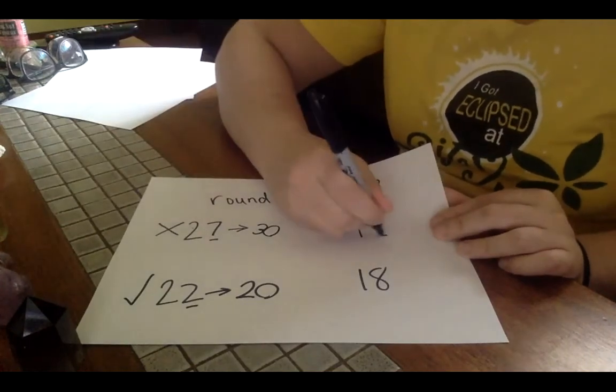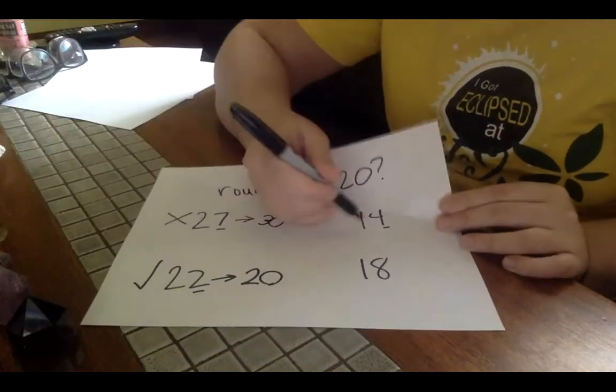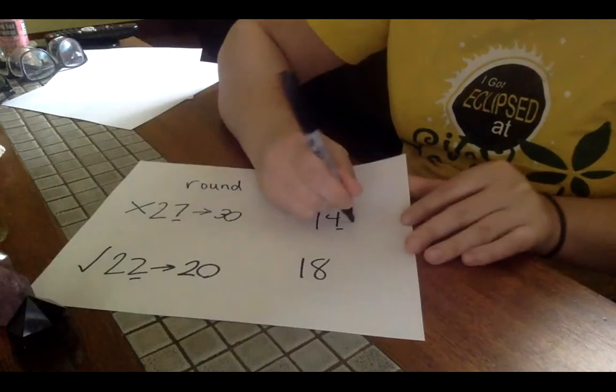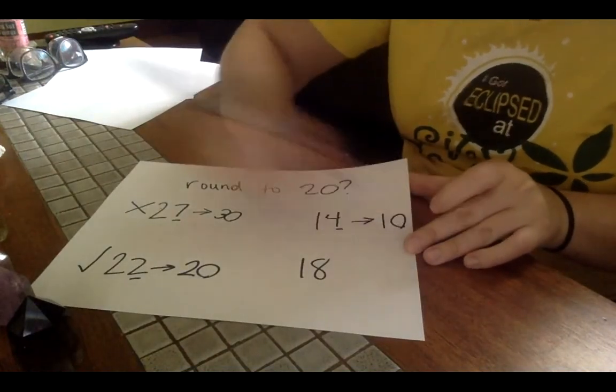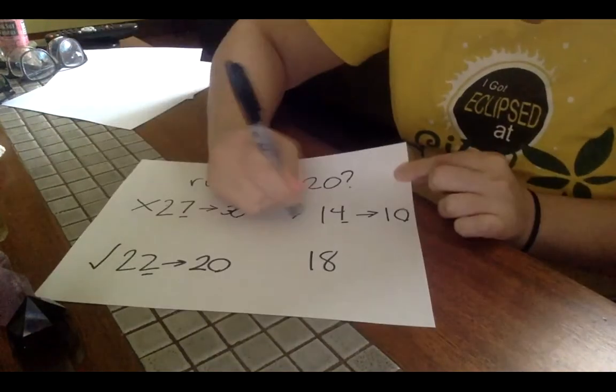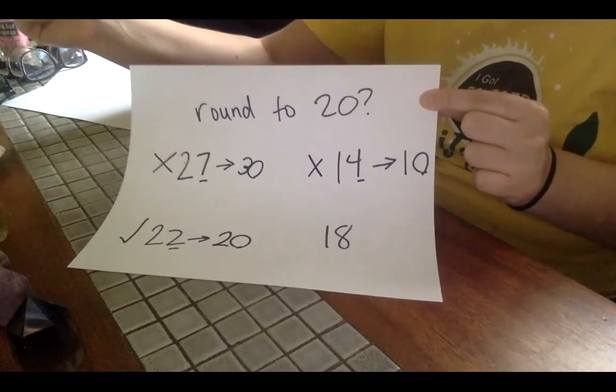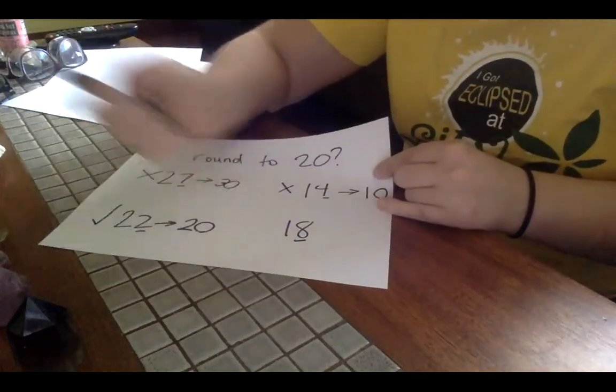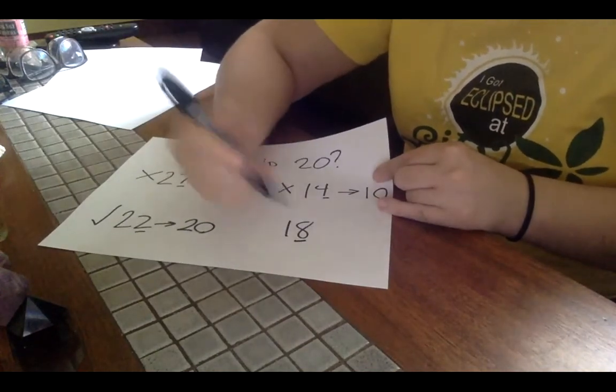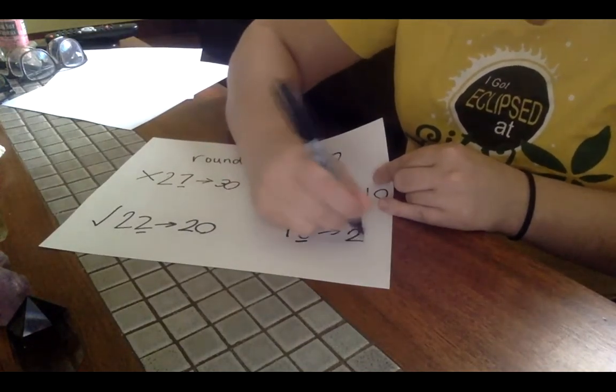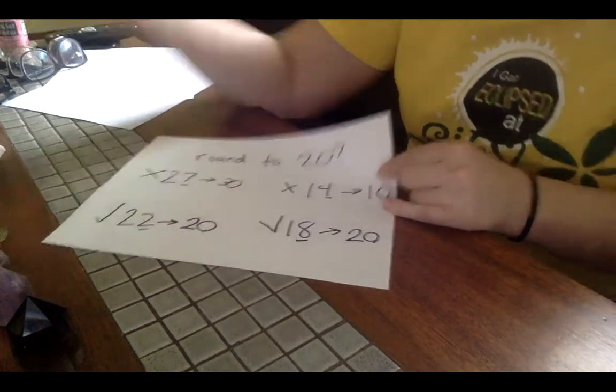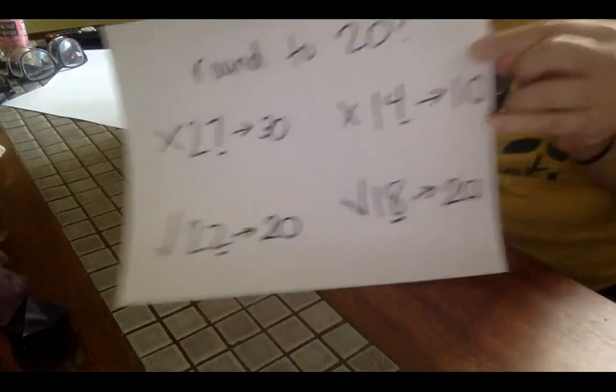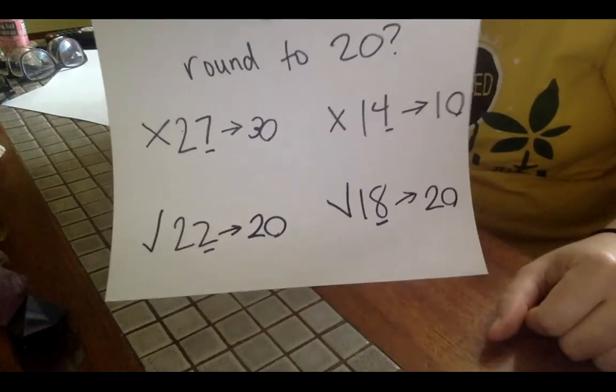14. One through four, stay on the 10th floor. We're going to stay on the floor around. So 14 would round to 10. So nope, it's not going to round to 20. 18. Five through nine, we're going to climb the vine. It's closest to, that's right, 20. So 22 and 18 will round to 20.